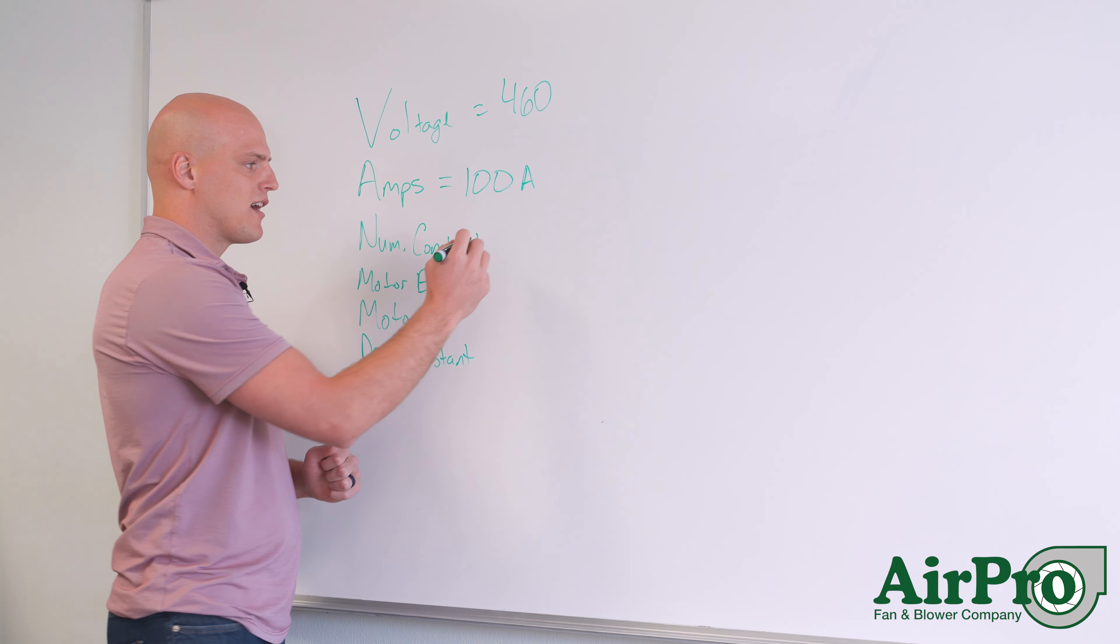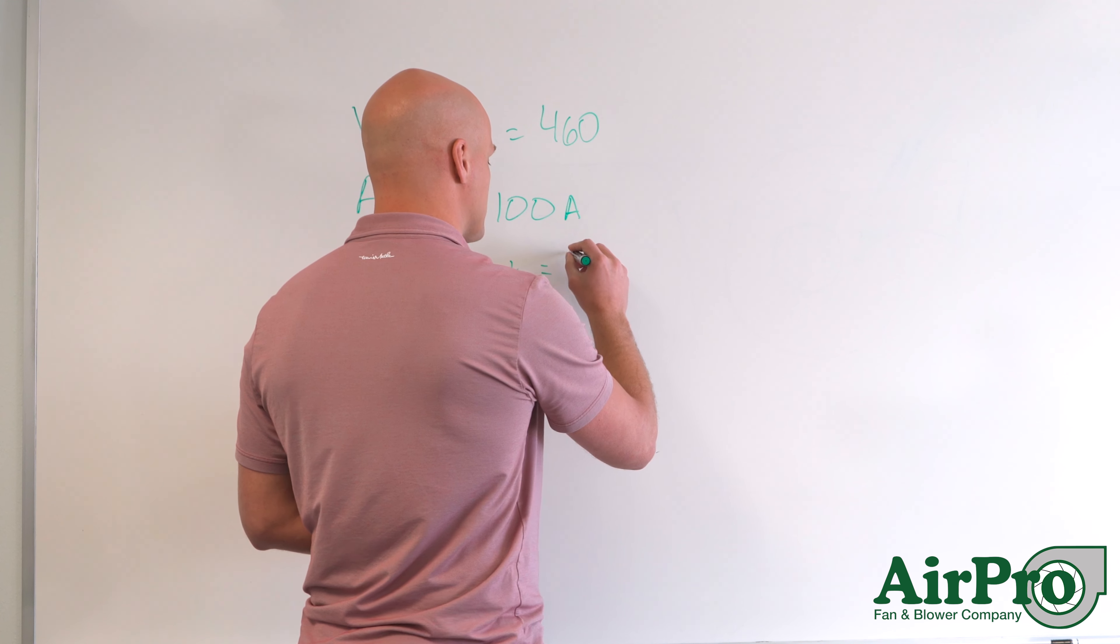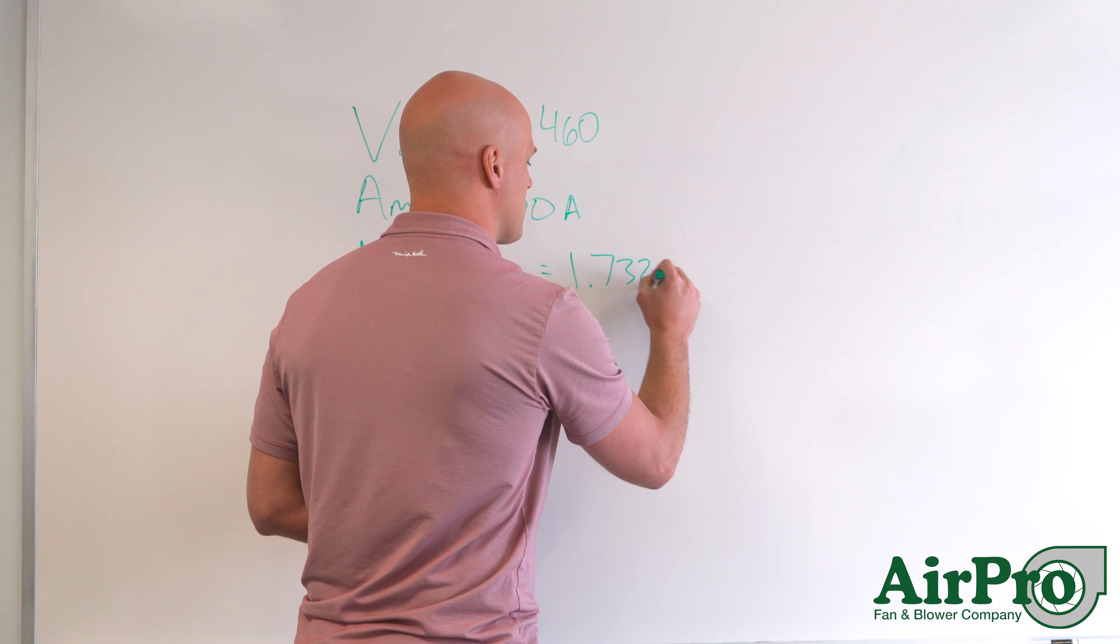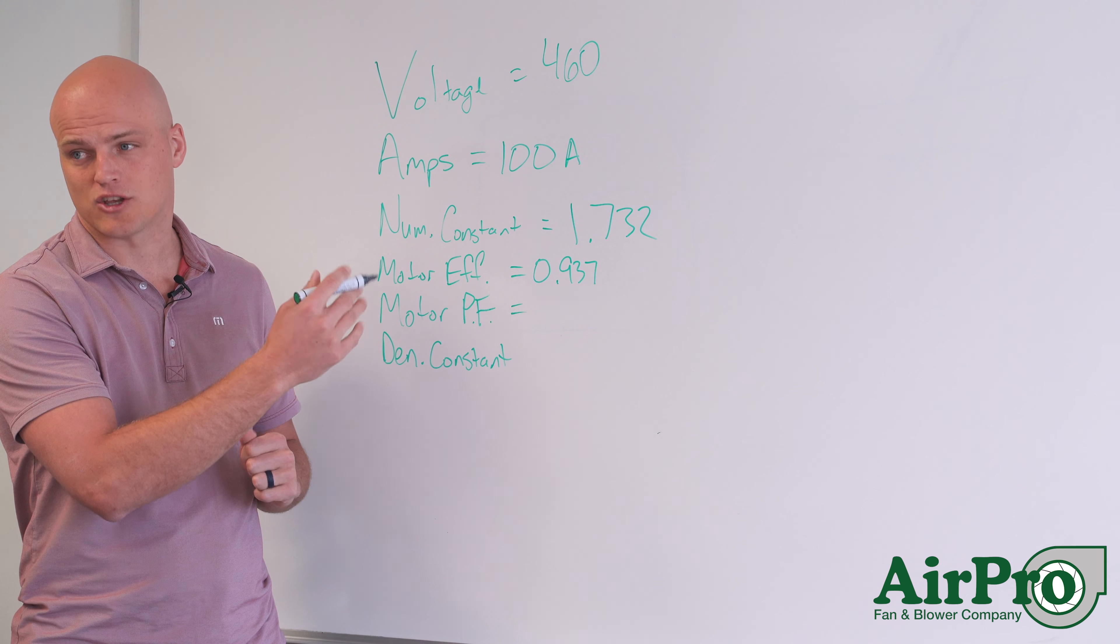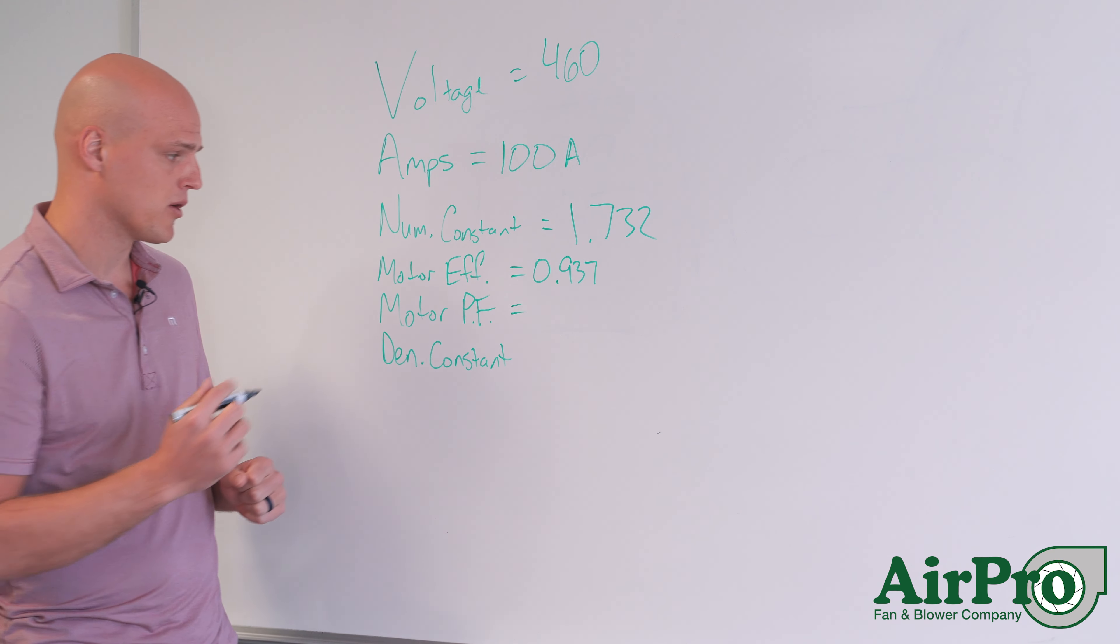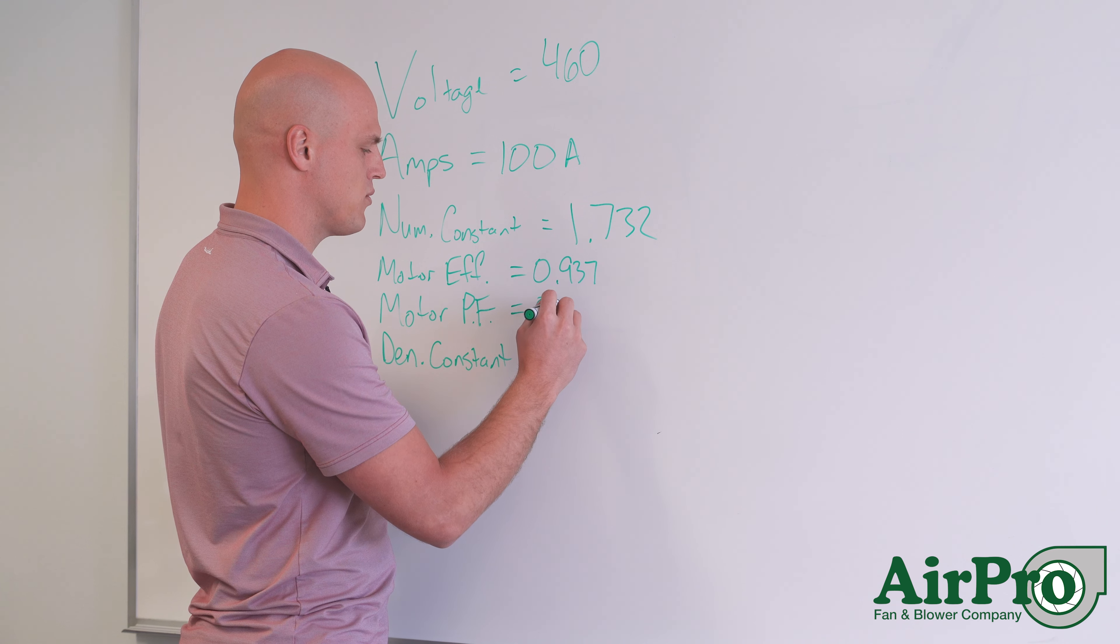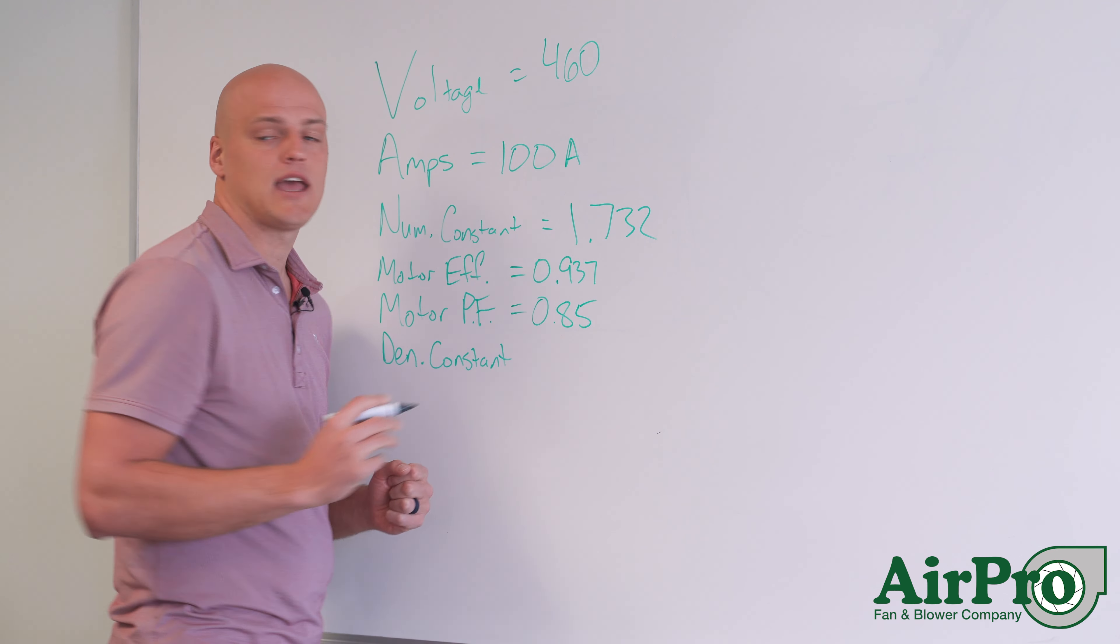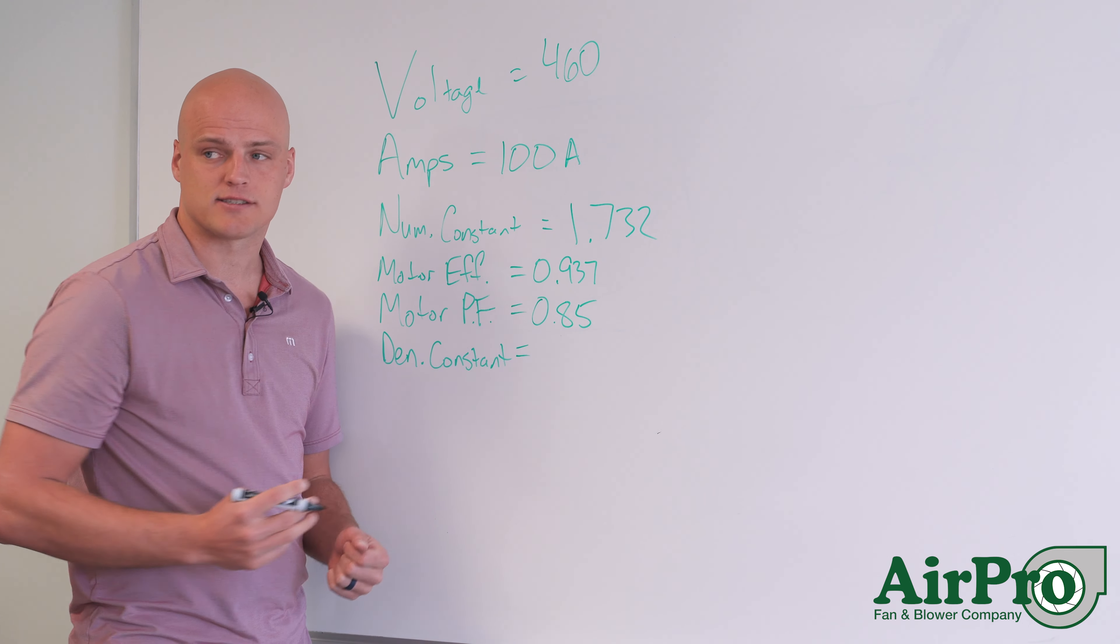And your numerator constant, when you're using voltage and amps, is always 1.732. For motor power factor, again, you can probably find that on the nameplate of your motor.